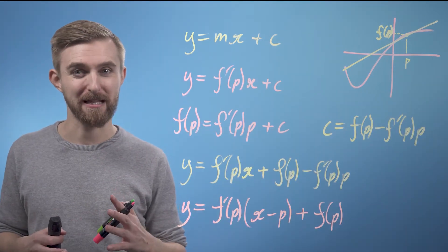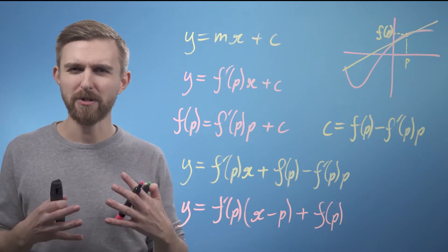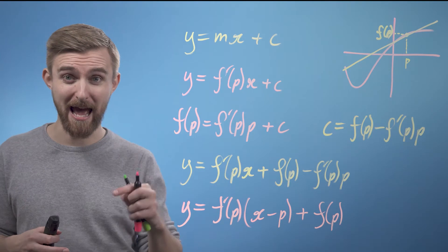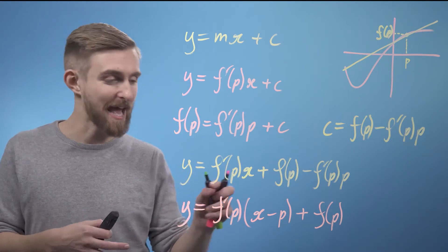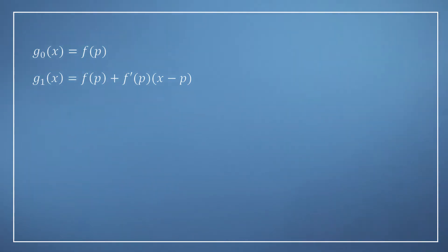What this shows us is that by building our approximation around the point p, when we use our gradient term f'(p) rather than applying it directly to x, we instead now apply it to (x - p), which you can think of as how far are you away from p. So, we can now write down our first two approximation functions to f(x) at the point p, the zeroth and the first.